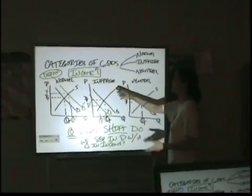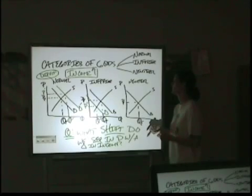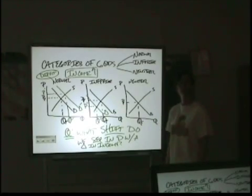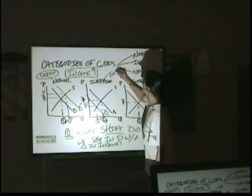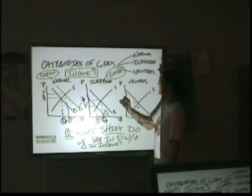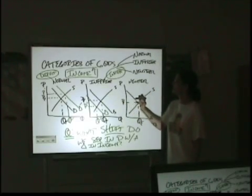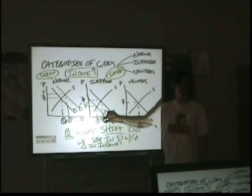With inferior goods, these are opposites. Inverse. They have an inverse relationship. Which means demand will decrease for an increase in income. Income goes up, demand goes down. Backwards.